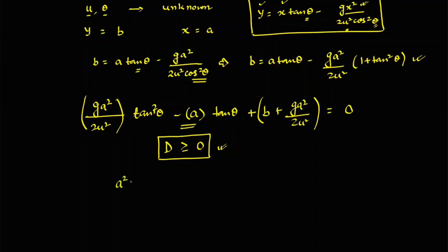So here the discriminant is B square, which is this one, A square minus 4AC, 4 into G A square by 2U square multiplied by B plus G A square by 2U square. And this is greater than or equal to zero.